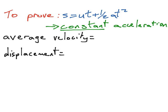We start by finding the average velocity. If we start at a speed of u meters per second and get up to a speed of v meters per second, to get the average of those two, we just add them together. So it will be u plus v divided by 2.